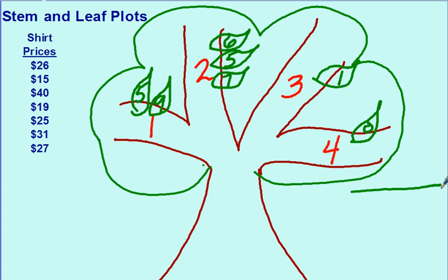So to make an actual stem and leaf plot, you write it like this. You don't actually have to draw a tree. You draw a small t like this. Stem on the left and leaf on the right. Now copy your stems. The stem is actually anything except the last number. So the stems could be very big. So one, two, three, and four are stems here.